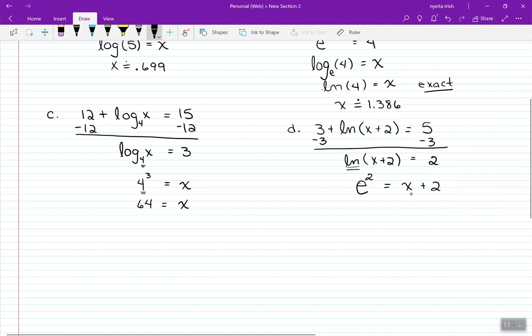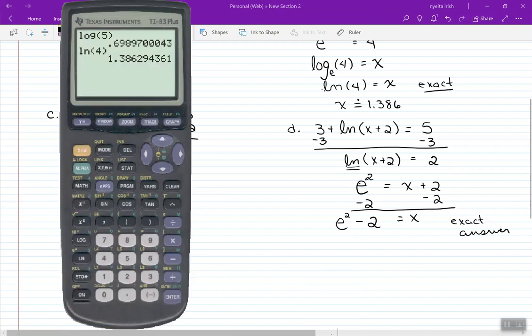You're trying to solve for x. So get rid of the plus 2 by subtracting 2. So I have x equals e squared minus 2. This is my exact answer.